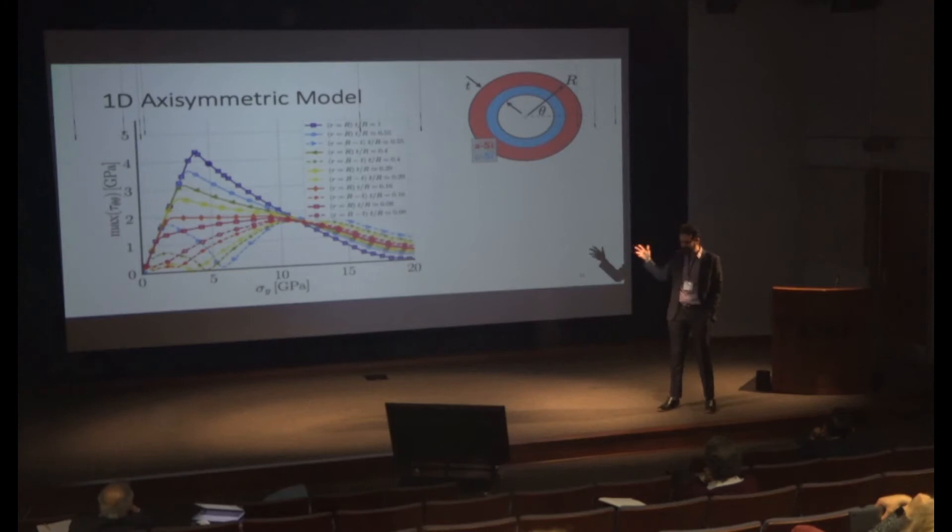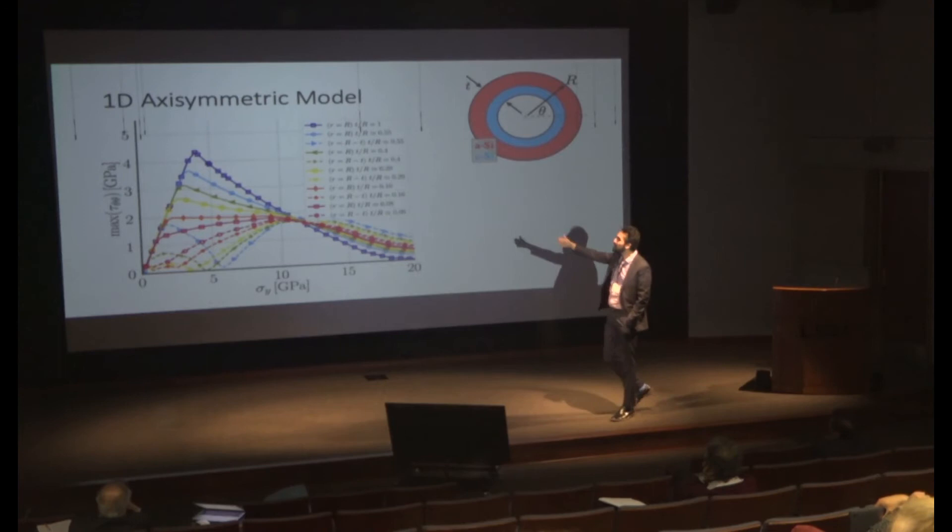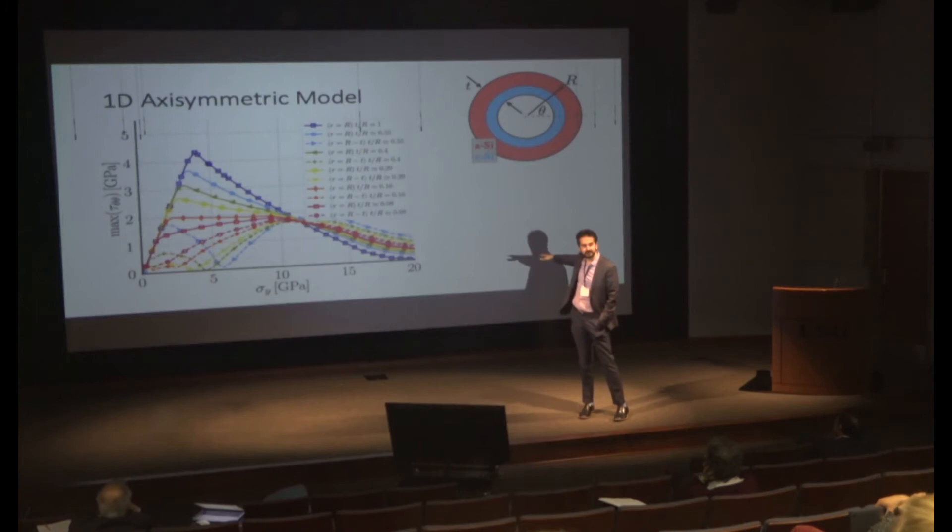Based on what the yield strength of this material is compared to one of the elastic constants, you have two situations. At sigma y equals zero, you essentially yield right away and don't create any stresses. At sigma y equals infinity, you don't have a positive maximum—you become elastic everywhere. In between, you either yield twice, in compression and tension, or only in compression.